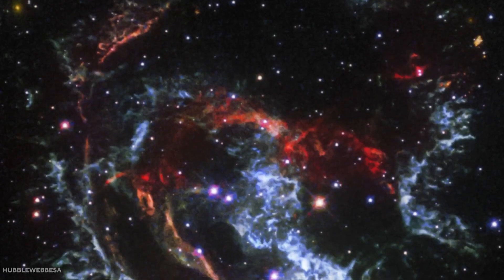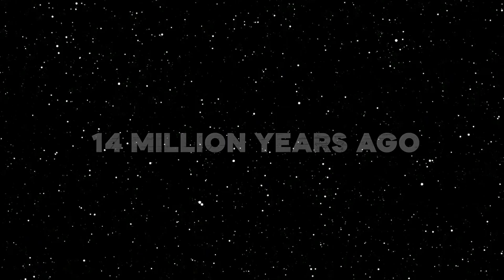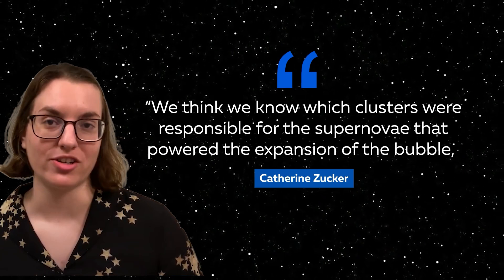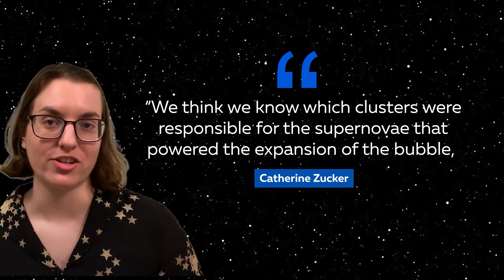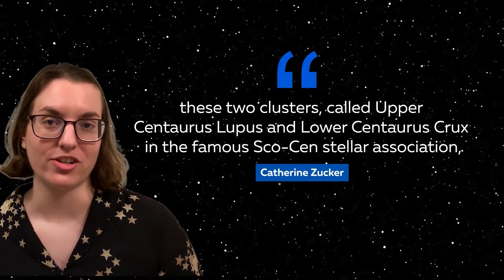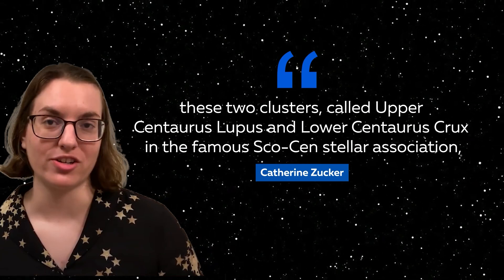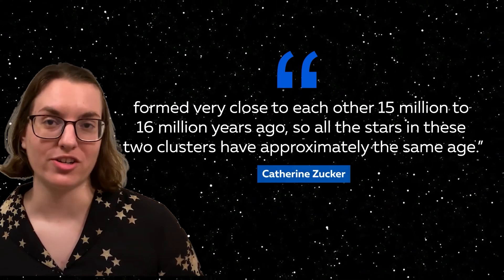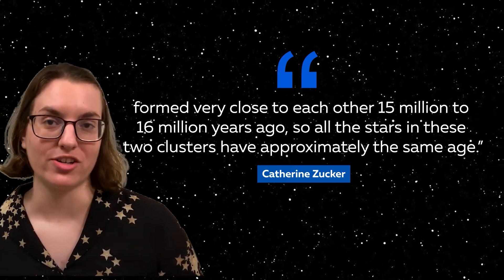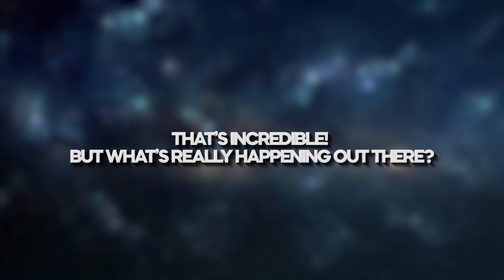The findings propose that a supernova linked with the bubble has detonated about every million years since the first one exploded about 14 million years ago. Zucker explains, we think we know which clusters were responsible for the supernovae that powered the expansion of the bubble. These two clusters, called Upper Centaurus Lupus and Lower Centaurus Crux, in the famous Sco-Cen-Stella Association, formed very close to each other 15 million to 16 million years ago. So all the stars in these two clusters have approximately the same age.